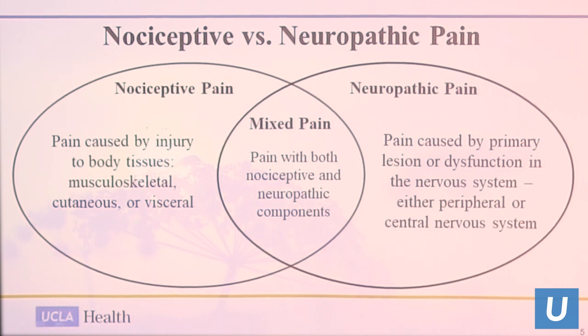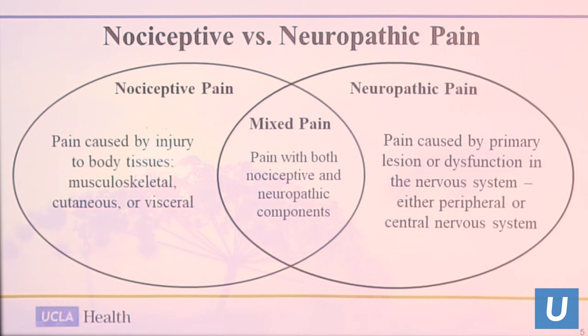When we talk about pain, we separate it into two big categories: nociceptive and neuropathic. Nociceptive pain is when you bump your elbow or hit your knee — pain receptors are activated and send signals to your brain. It is injury to body tissues. Neuropathic pain, common with diabetic neuropathy and chemotherapy-induced neuropathy, involves a lesion in the central or peripheral nervous system. Most of my patients actually have mixed pain — both nociceptive and neuropathic.